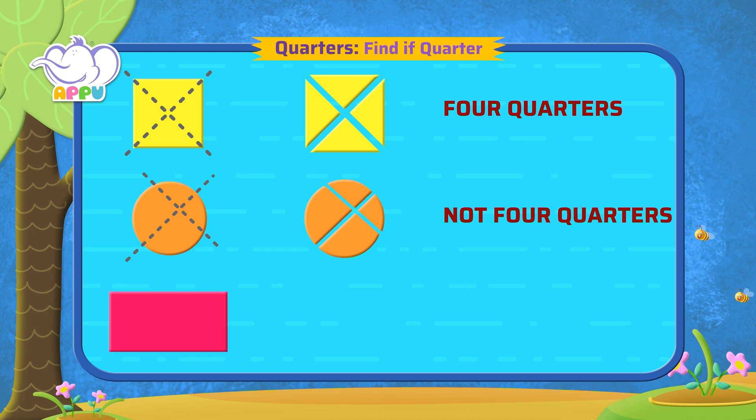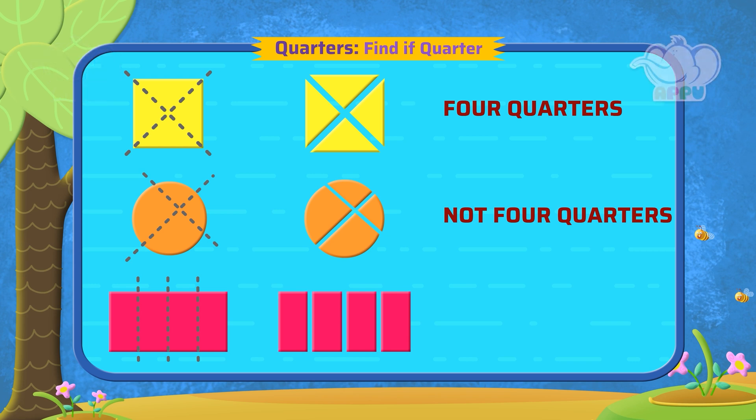Let's cut this rectangle along the dotted line. This rectangle is cut into four parts now. Let's compare the four parts by placing them over each other. We can clearly see that all the parts are of the same size. So it is four quarters. Fantastic!